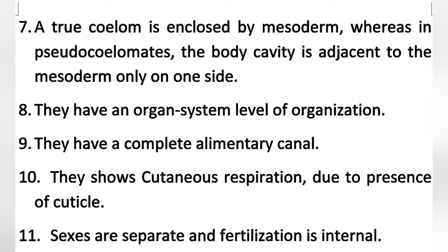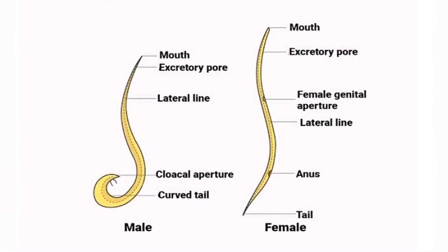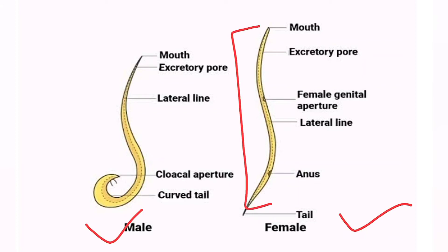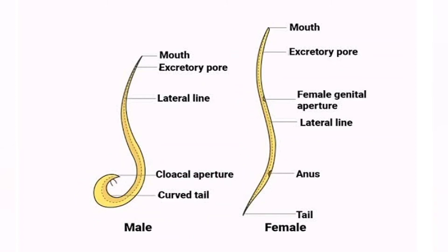Sexes are separate and fertilization is internal, meaning male and female bodies are different. A common exam question asks: what are the differences between male and female Ascaris? The first difference is that the female body is longer than the male body. The second difference is that the male body has a curved tail. These are two very important features.